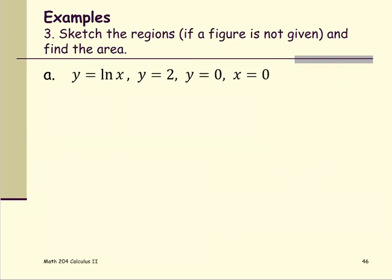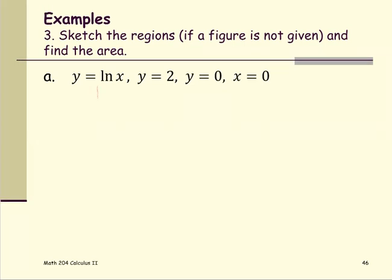Some problems can be done both ways. For our first example, we have y equals natural log x, y equals 2, y equals 0, and x equals 0 — four different pieces. You need to sketch the graph to begin with. The basic graph of y equals natural log x is on the right side of the xy plane, and y equals 2 is a horizontal line.